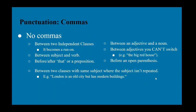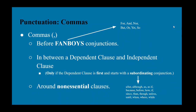You do use commas before FANBOYS conjunctions — for, and, nor, but, or, yet, so — and between a dependent clause and an independent clause. You can tell whether a clause is dependent if it starts with a subordinating conjunction like 'although' or 'before.' For example: 'Although I like dogs, I like cats more.' You also put commas around non-essential clauses.